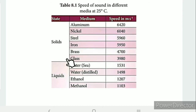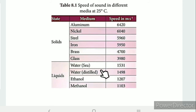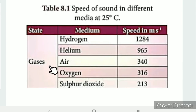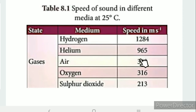In liquids, the table includes distilled water, clean water, and ethanol. For gases, it lists hydrogen, helium, air, oxygen, and sulfur dioxide.